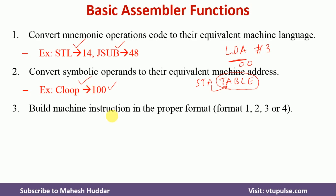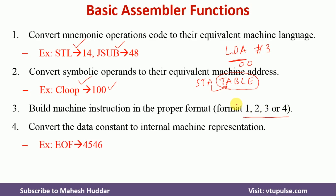The third function is to build machine instructions in a proper format. When converting an assembly language program into machine language, we must be specific about instruction formats — for example, whether it is format one, format two, format three, or format four in SIC/XE. We have to identify the correct instruction format and convert accordingly.